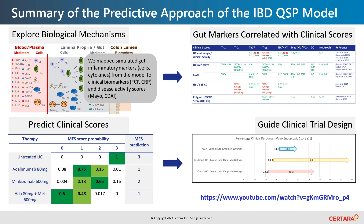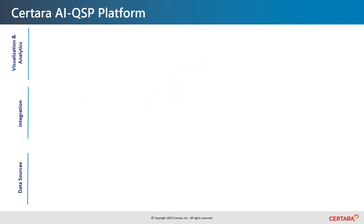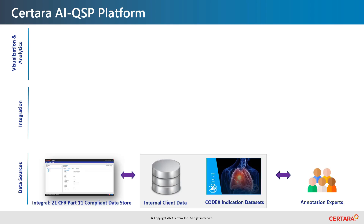We are now using this approach with clients to assess completely novel targets for IBD at very early stages of development to guide portfolio prioritization. A more detailed overview is freely available as a recorded YouTube webinar. We are expanding this approach to other therapeutic areas, leveraging our existing QSP platforms, Satara's new Layer AI platform, and our proprietary Codex database, which contains curated clinical studies for some 60 diseases.